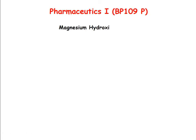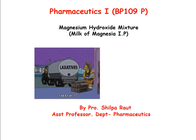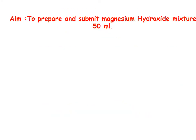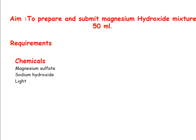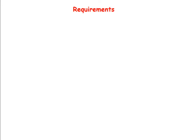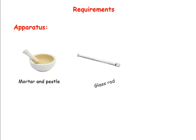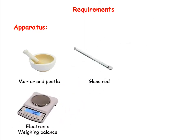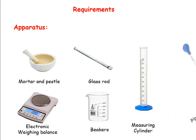Welcome, dear student. Today we will see how to prepare magnesium hydroxide mixture, that is milk of magnesia. The aim is to prepare and submit magnesium hydroxide mixture 50 ml. Requirements — chemicals: magnesium sulfate, sodium hydroxide, light magnesium oxide, chloroform, peppermint oil, and purified water. Apparatus required: mortar and pestle, glass rod, electronic balance, beakers, measuring cylinder, and pipette.